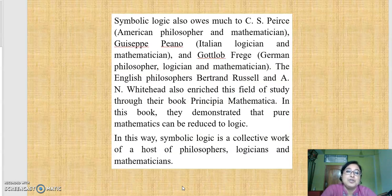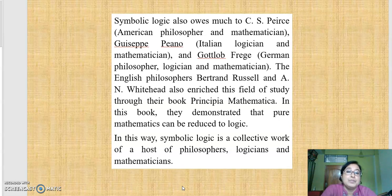Symbolic logic also owes much to C.S. Peirce, American philosopher and mathematician; Giuseppe Peano, Italian logician and mathematician; and Gottlob Frege, German philosopher, logician, and mathematician. The English philosophers Bertrand Russell and A.N. Whitehead also enriched this field through their book Principia Mathematica, in which they demonstrated that pure mathematics can be reduced to logic.